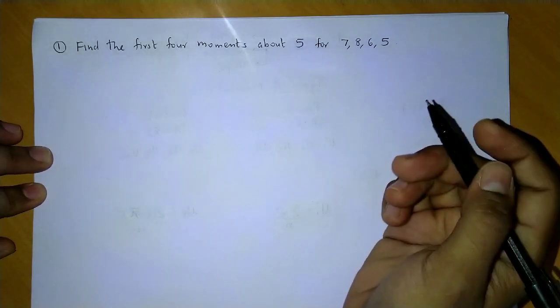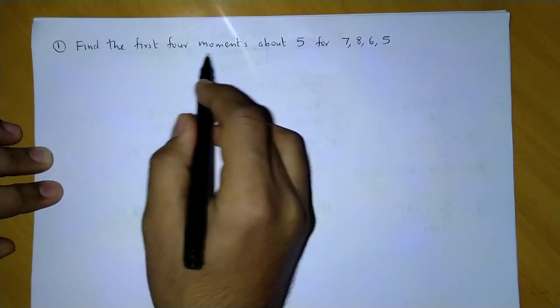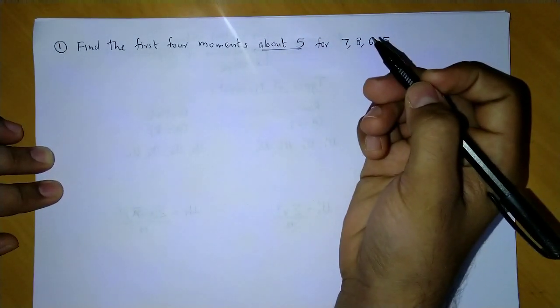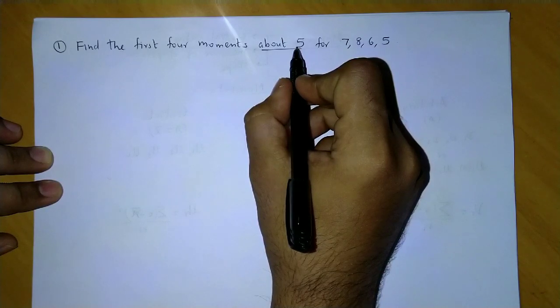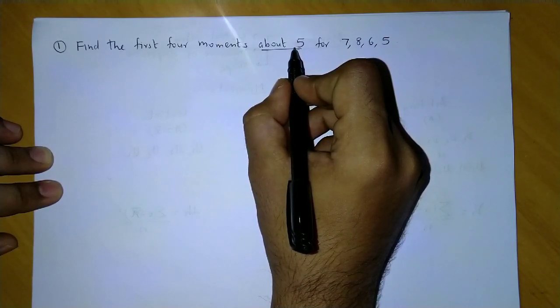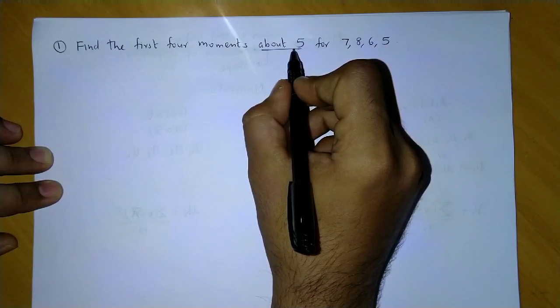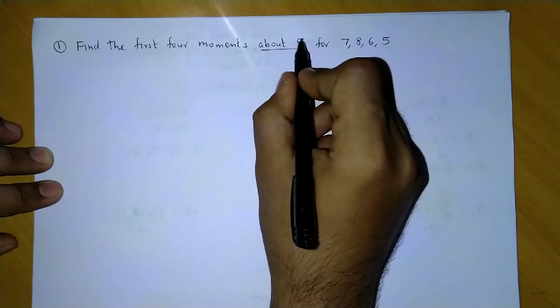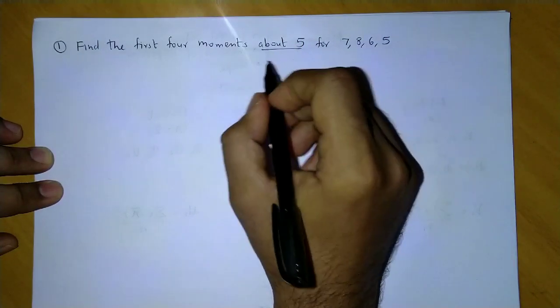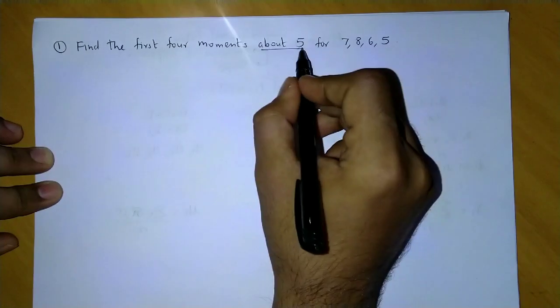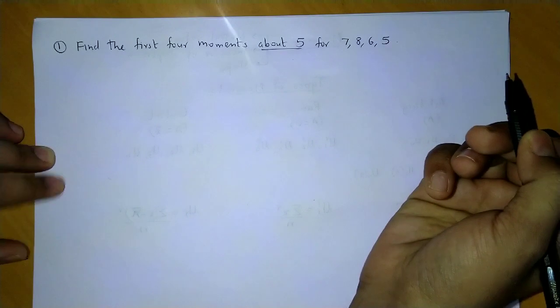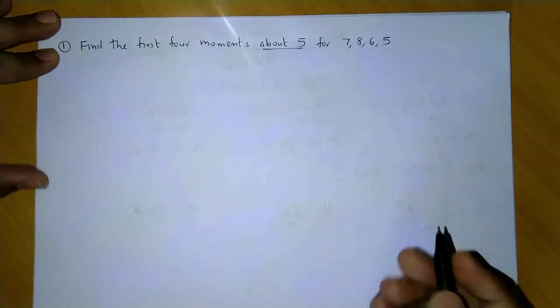Let us take a simple example: find the first four moments about the value 5. So this would be arbitrary moments, right? We have to find the arbitrary moments about 5 for 7, 8, 6, and 5. So let us prepare the table first.